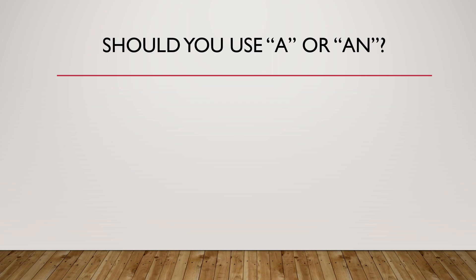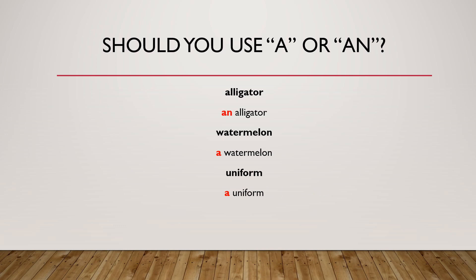Should you use a or an? Let's try a little test. Alligator — an alligator. Watermelon — a watermelon. Uniform — a uniform. Helicopter — a helicopter.